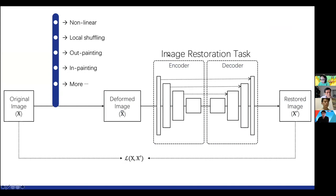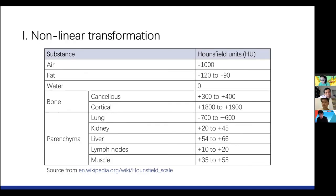In this framework, the most important part is how to create the image transformations, because all other components are already available. In this paper, we suggest four image transformations: non-linear transformation, local shuffling, outer cutout, and inner cutout. I will introduce them one by one. First, non-linear transformation.